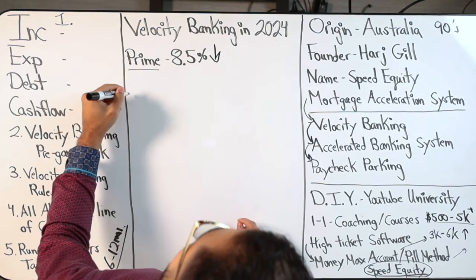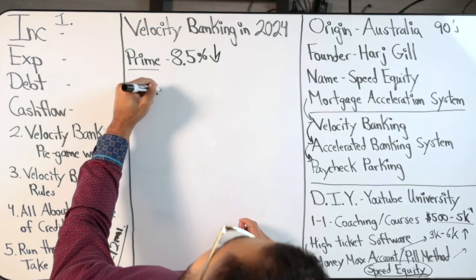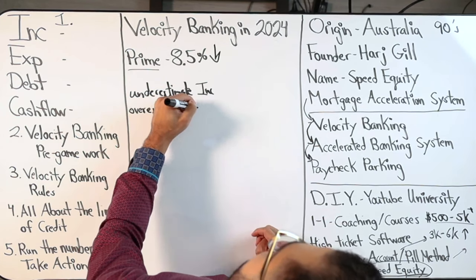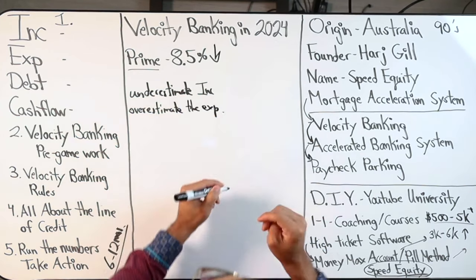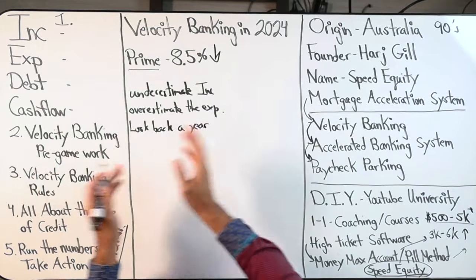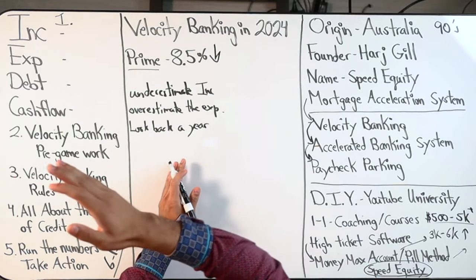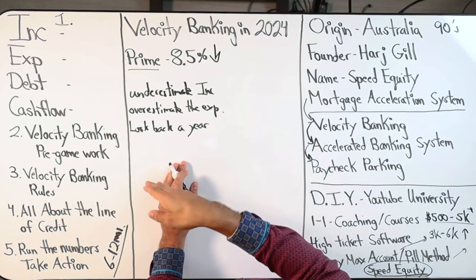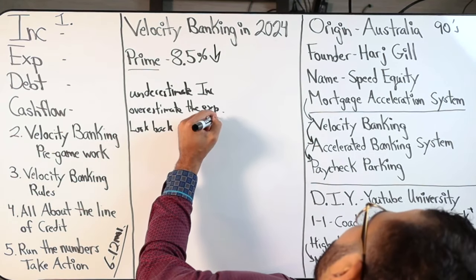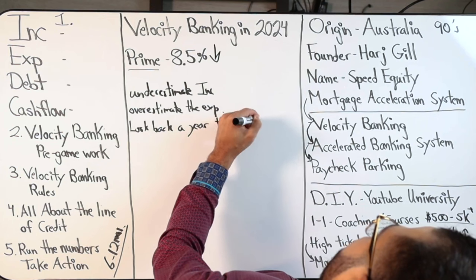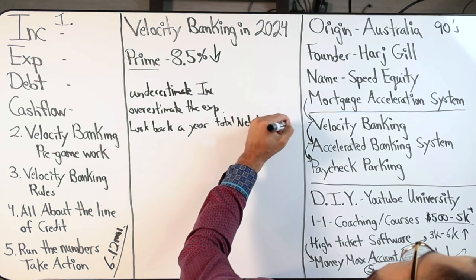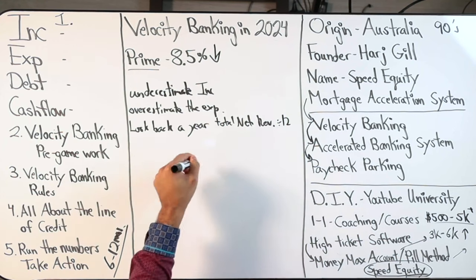We want to underestimate your income, overestimate the expenses, and we want to look back a year. How much did you make last year in total net revenue? Take that number and divide by 12. So look back a year, total net revenue, divide by 12 — what's that number?